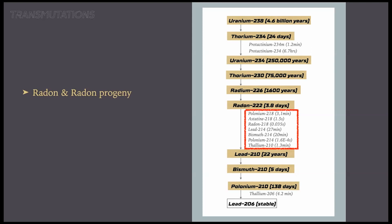The current limit for uranium miners is 0.3 working levels or less. Miners during the uranium boom frequently worked in environments with 20 to 40 working levels, and exposures over 100 working levels were not uncommon. Miners experienced up to six times the lung cancer rates of normal populations, and if you smoked, the risk was multiplied even further.